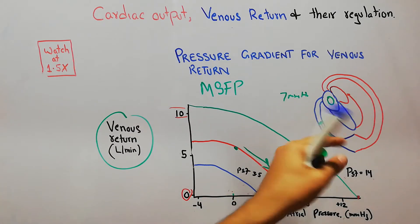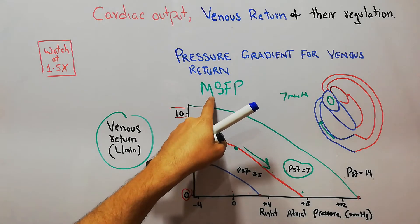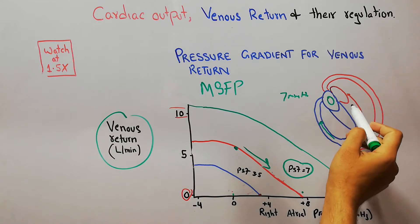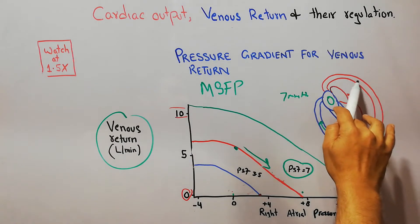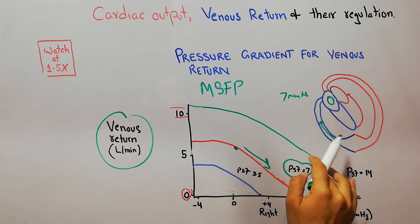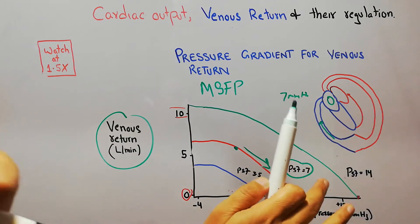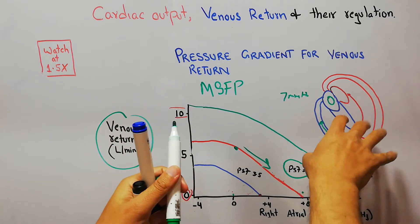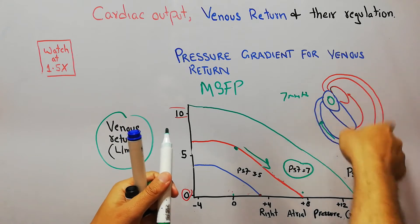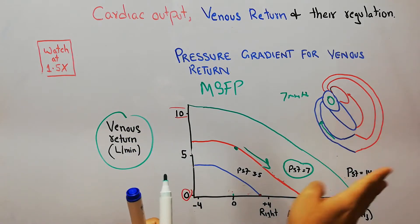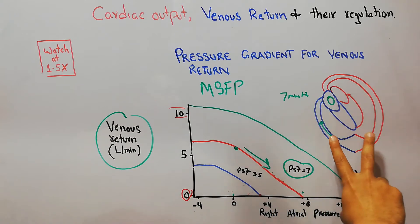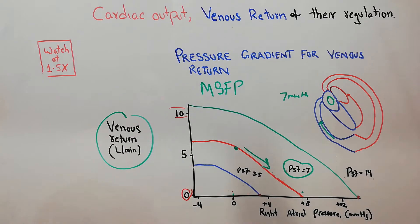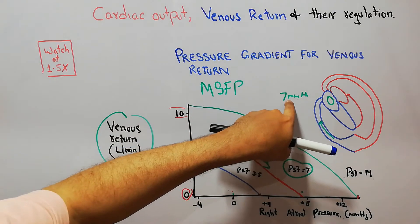Mean systemic filling pressure is the pressure in the blood vessels when heart beating has been stopped, blood flow has ceased, and the pressure on the arterial and venous sides has equalized after a few seconds. That pressure measured is known as mean systemic filling pressure, and its normal value is 7 mmHg.